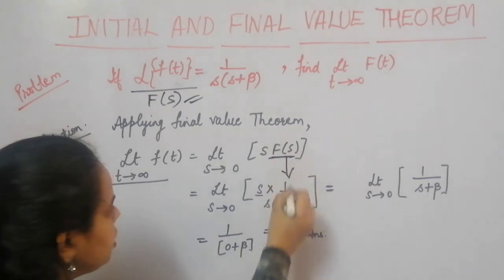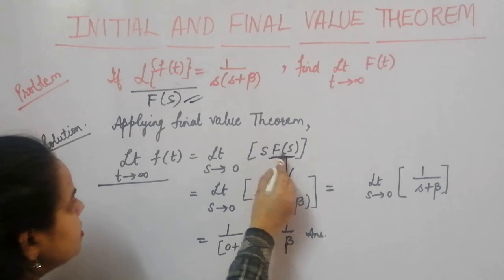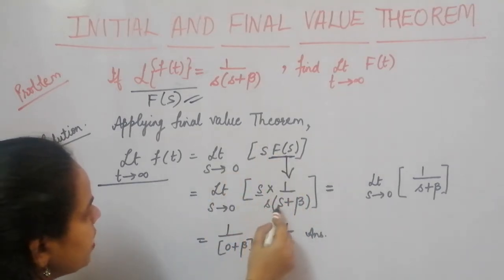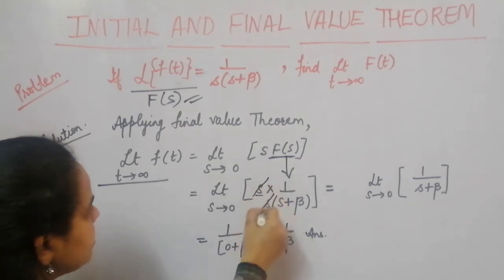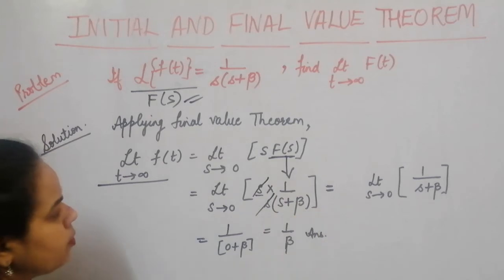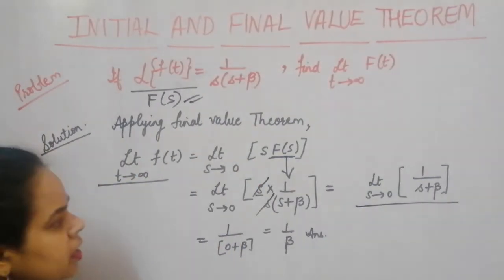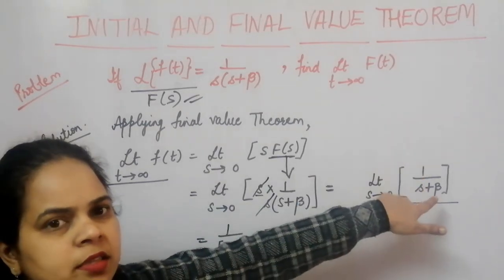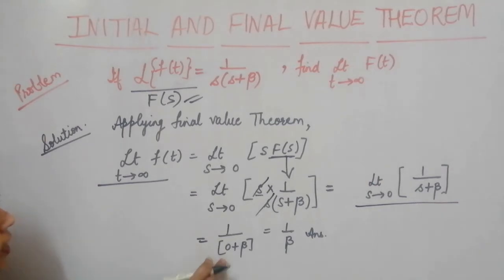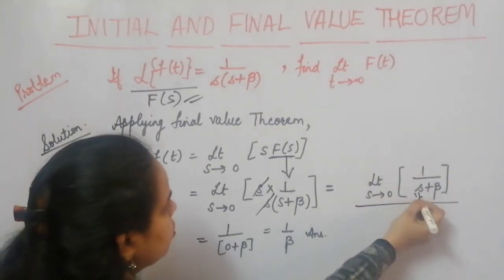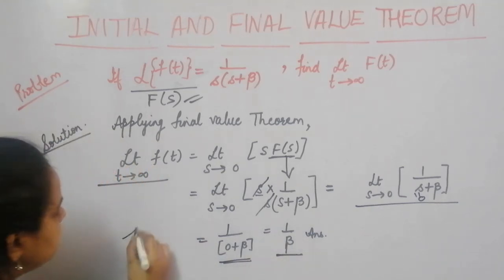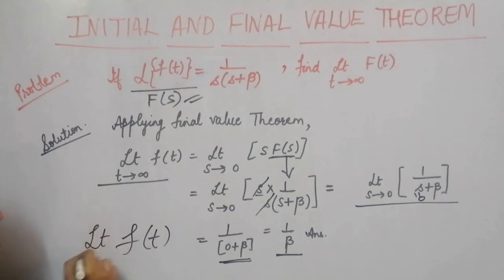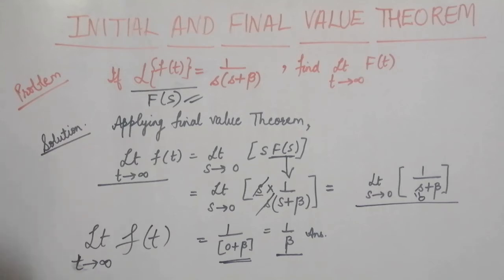In s·F(s), we substitute F(s) = 1/[s(s+β)], giving s × 1/[s(s+β)] = s/[s(s+β)]. The s in numerator and denominator cancel, leaving 1/(s+β). So the result is limit s→0 of 1/(s+β). Putting s = 0, we get 1/β. Therefore, limit t→∞ of f(t) = 1/β. This is how you apply the initial or final value theorem.